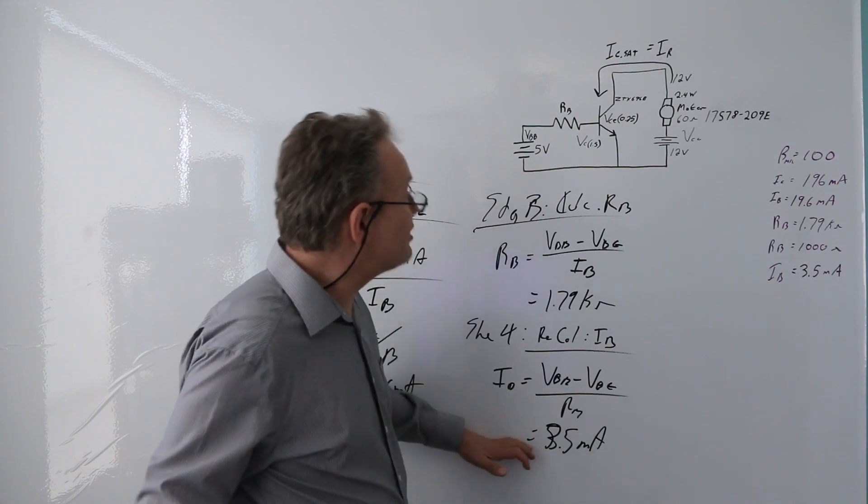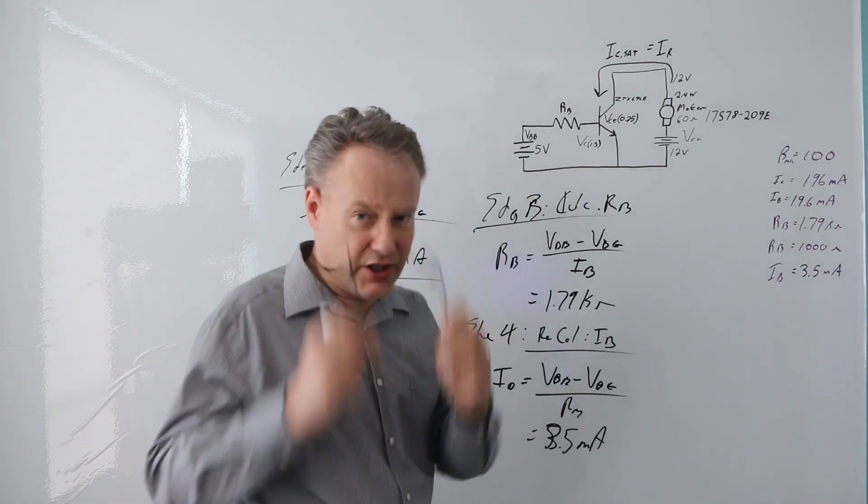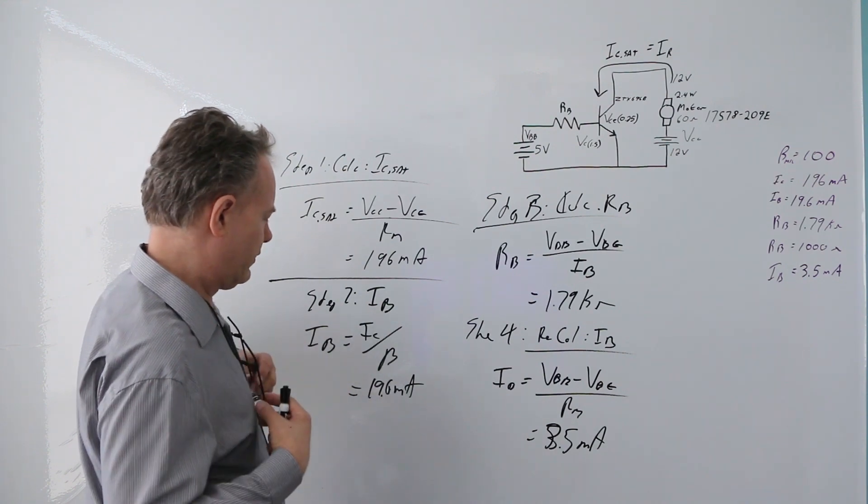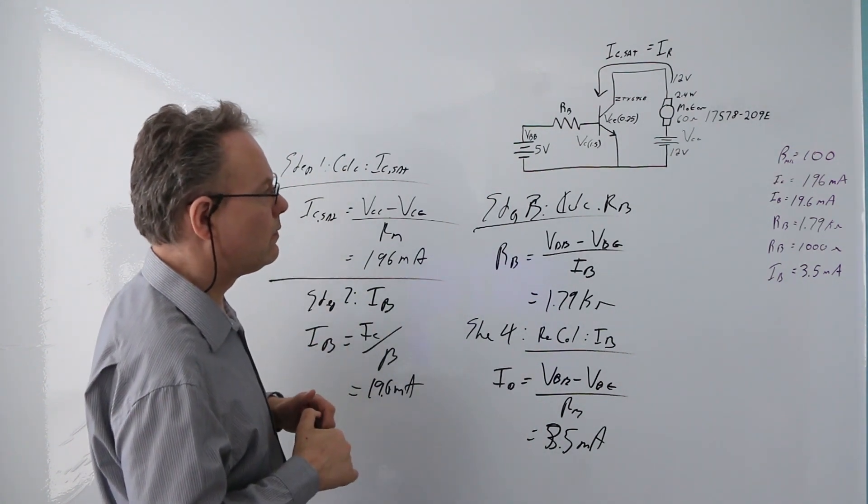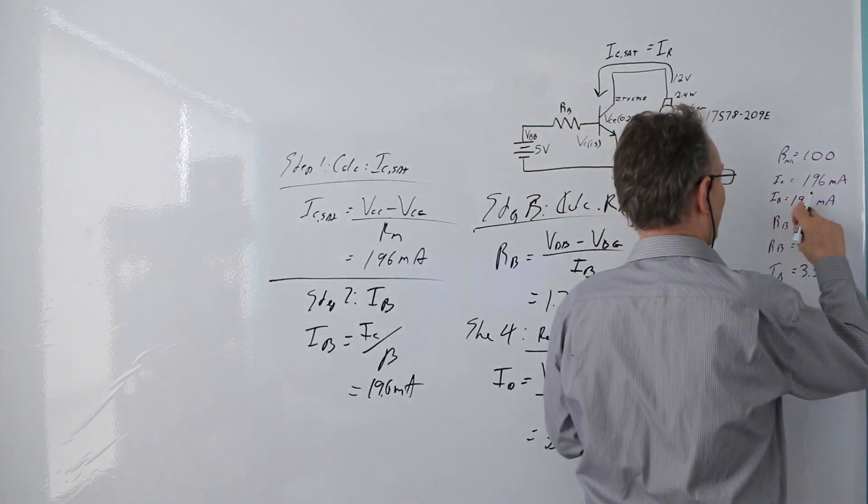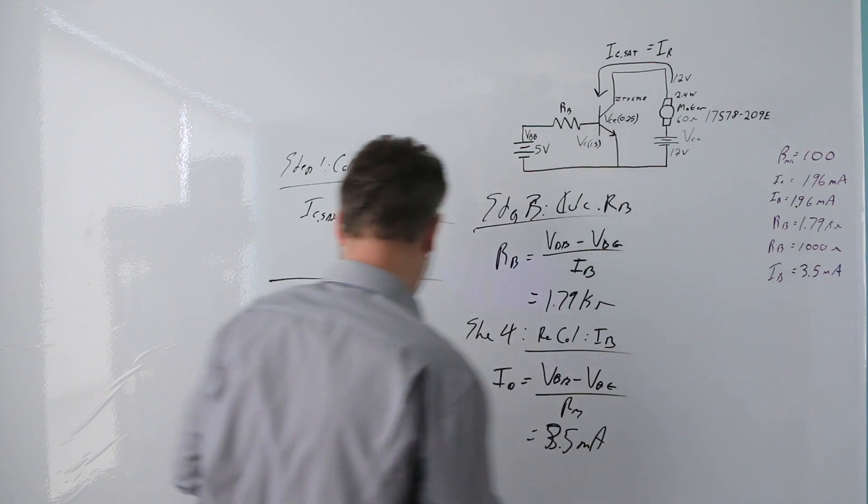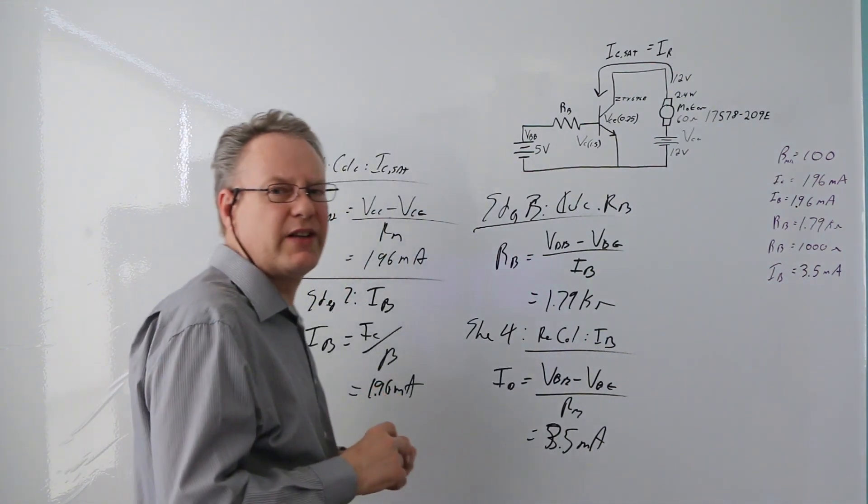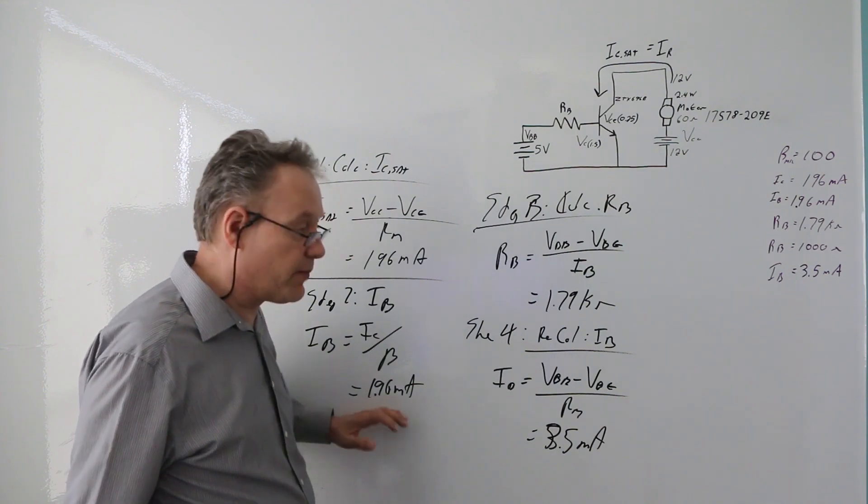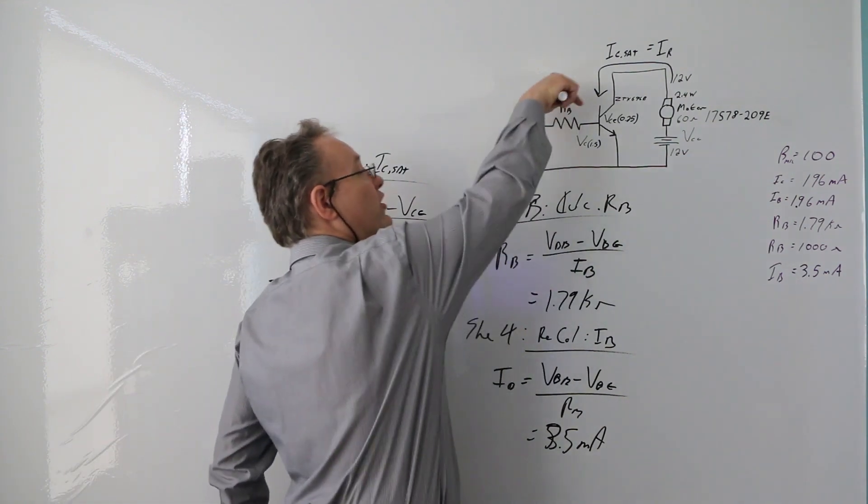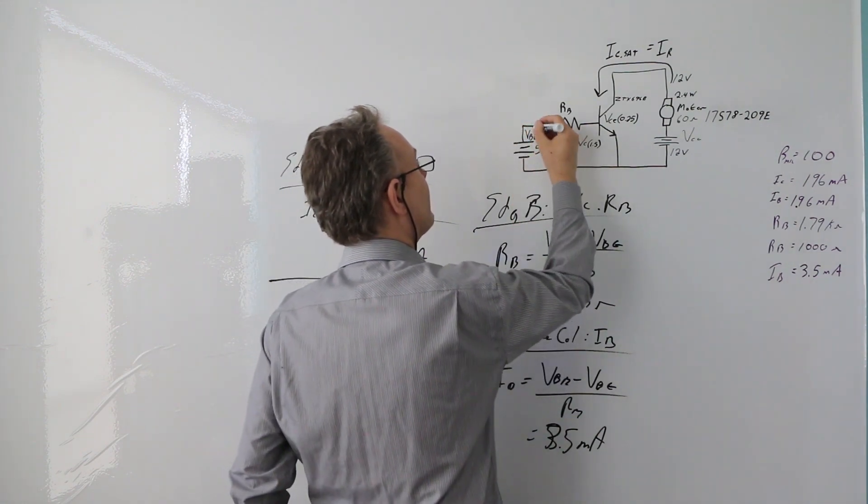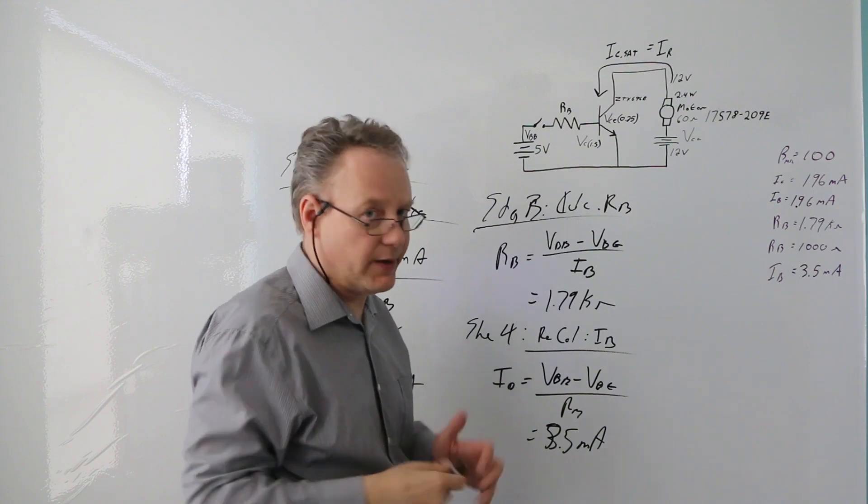3.5 milliamps is a lot bigger than 1.96 milliamps, so I'm good. It's absolutely giving enough current through the base to saturate that and the motor will be on. You know what, let's add a switch. Because if you don't have that switch, the motor's going to be running all the time. So that's BJT.